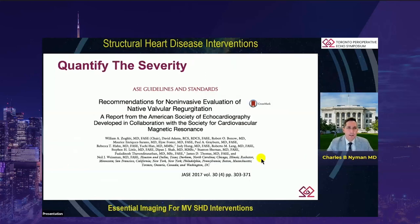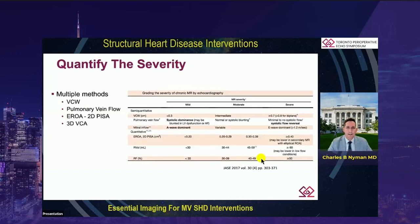The next step is quantifying the severity, and one follows ASE guidelines, but I would encourage you to go more to a quantification rather than just eyeballing it — avoid the semi-quantitative and go to the truly quantitative. My personal preference, if it is a fairly standard discrete lesion, is to calculate a 2D EROA. In my clinical practice, I focus primarily on a 3D vena contracta area, with cutoffs as demonstrated per the guidelines.